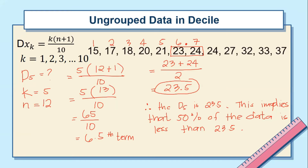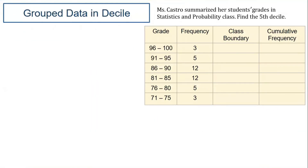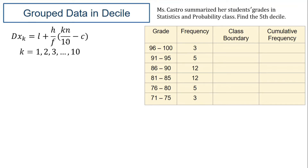Now let's proceed. What if the problem is in grouped data? It uses the same format as percentile, but again the difference is the divisor used in the measure of position formula. The formula is: lower boundary plus the interval over the frequency, times the quantity of the measure of position minus the below cumulative frequency.